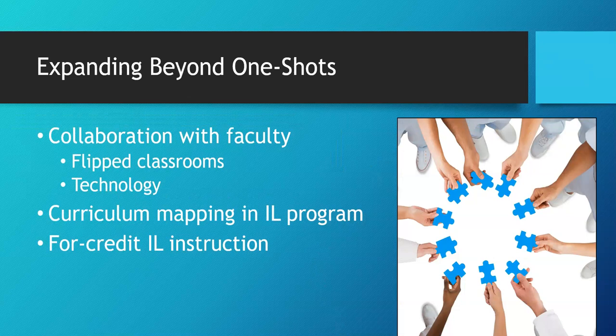Another option for expanding beyond one-shots is for-credit information literacy instruction, where you have access to students over the course of a semester. It's my understanding that Liberty and Lycoming do not do this. I am a little skeptical of teaching information literacy outside the context of a course or discipline; however, there are people I really respect who say it works very well for them.